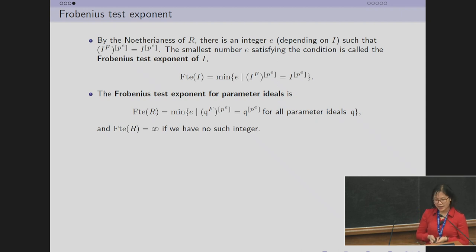So for all I, there is an integer e, depending on I, such that we have the equality here. The smallest number e that satisfies the condition is called the Frobenius test exponent of I. We define the Frobenius test exponent for parameter ideals as the minimum e that satisfies this condition for all parameter ideals Q. FTE(I) is infinity if no such integer exists.